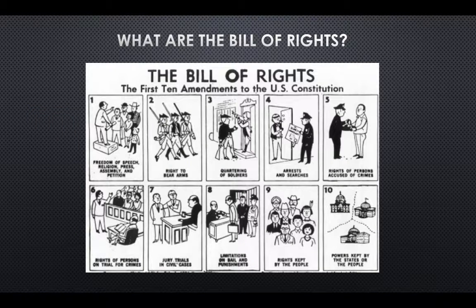They are known as the Bill of Rights, and they protect the rights and freedoms of all citizens. What are the Bill of Rights? Like we said earlier, the Bill of Rights are the first ten amendments and were ratified in 1791. They are rights that protect U.S. citizens and give them certain freedoms.